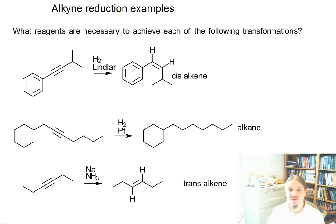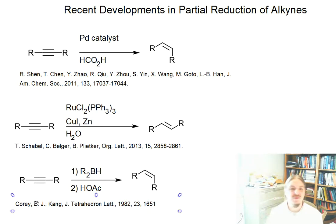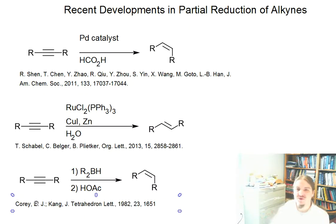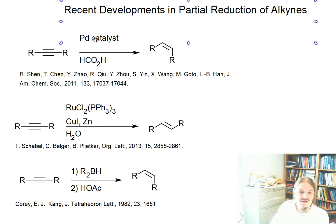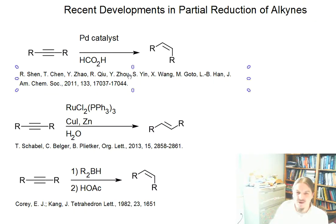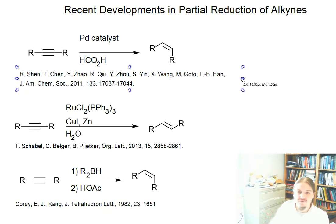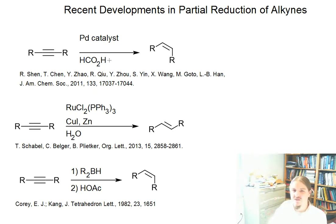Before I finish off the topic of alkyne reduction, I wanted to show a couple of examples of more recent developments in partial reduction of alkynes. One of the things that a lot of people have been trying to do is replace hydrogen gas. As you might know, hydrogen gas is flammable and under the wrong conditions can be explosive. So there's a lot of work out there to replace hydrogen gas in hydrogenation reactions. My first example here is a report in the Journal of the American Chemical Society from 2011, where some chemists from China and Japan identified formic acid as an equivalent source of hydrogen using a palladium catalyst.